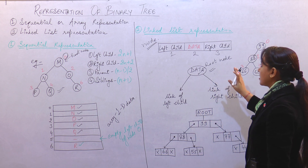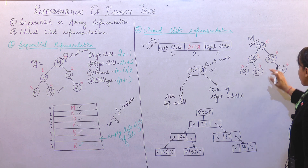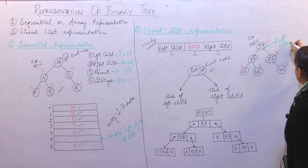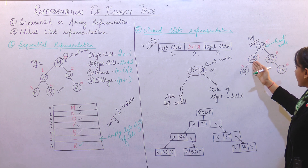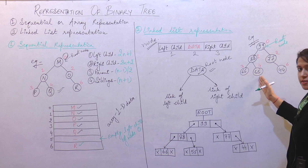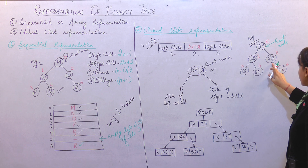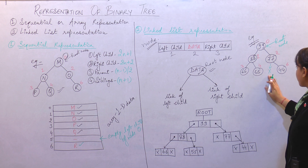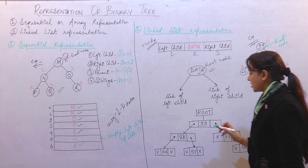Now we will understand this linked list representation of binary tree with an example. We are having 99 as our root node. This root node has two children: 88 and 77. Further, 88 also has two children, 66 and 55. Moving towards the right side, we are having 77. Node 77 does not have any left child, so we will make it empty. And 44 is the right child of node 77.